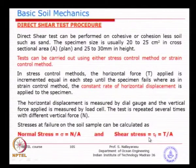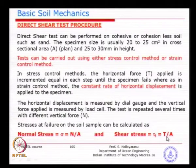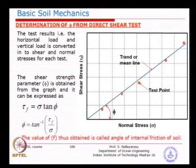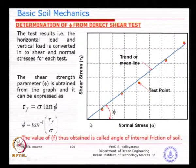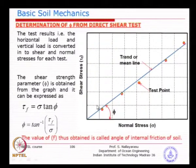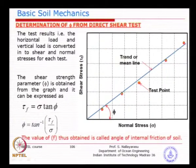Now going into the direct shear test. The sample is placed inside and a typical setup is like this. The test can be conducted by the standard ASTM method. The typical area in plan view is around 20–25 square centimeters, and the height is around 20–30 millimeters, split into two halves. The test can be done by either stress control or strain control, either by movement control or force control. The normal stress is calculated as the applied force divided by the plan cross-sectional area, and the shear stress is the horizontal force divided by the area.